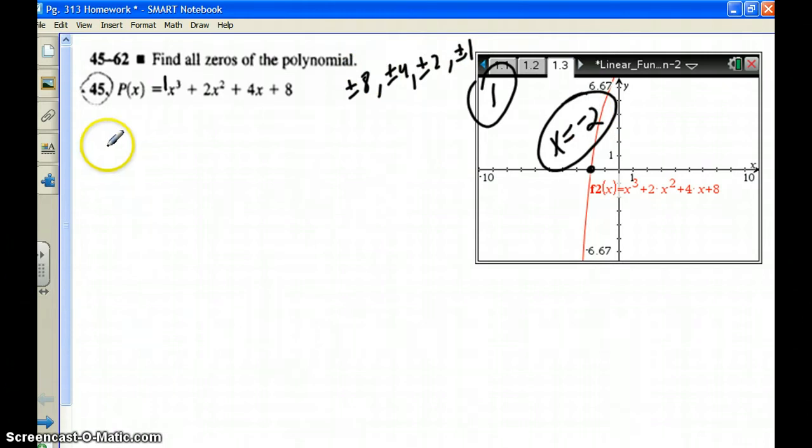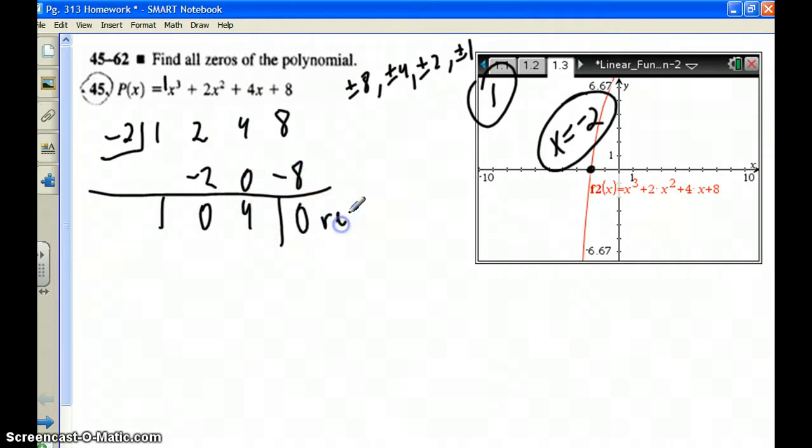And so let's go ahead and just synthetically divide out negative 2. So take the coefficients, 1, 2, 4, and 8. 1, negative 2, 0, 0, 4, and negative 8. All right, remainder 0.